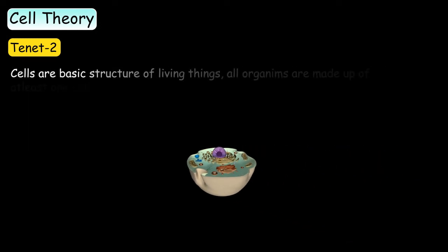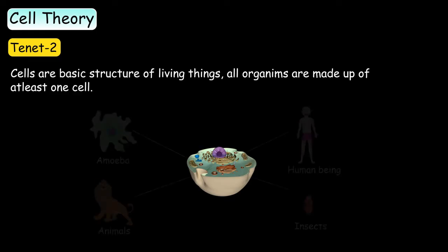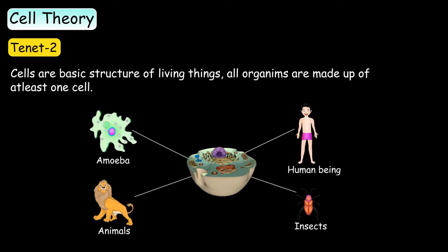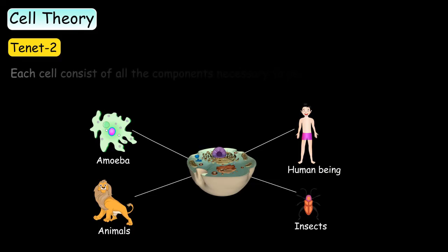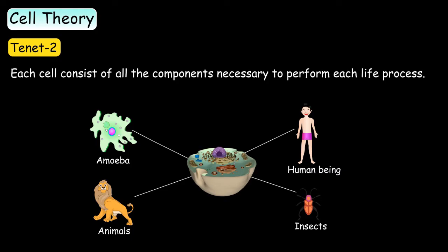Cells are the basic structure of living things. All organisms are made up of at least one cell and each cell consists of all the components necessary to perform each life process.